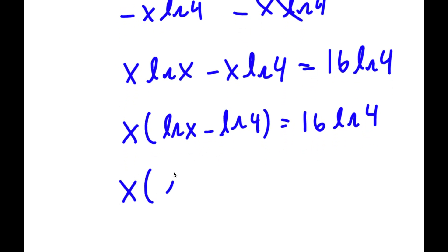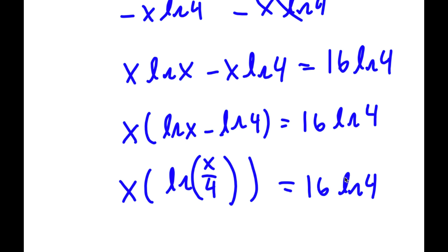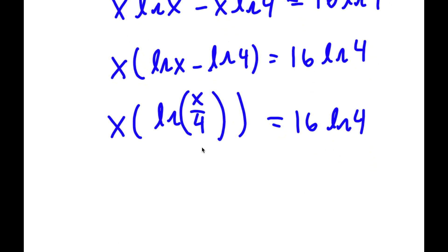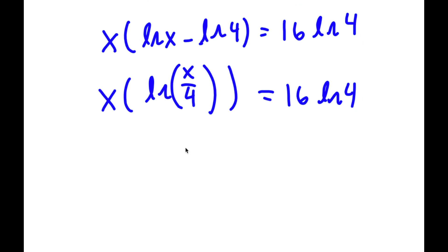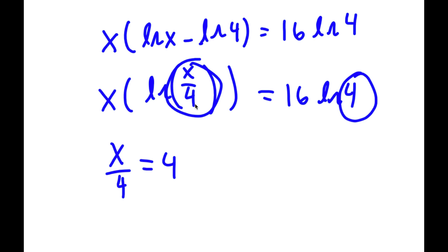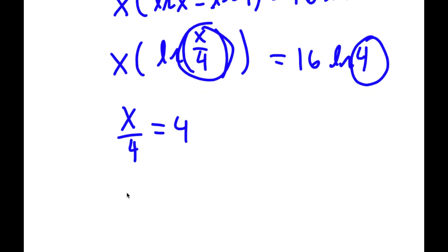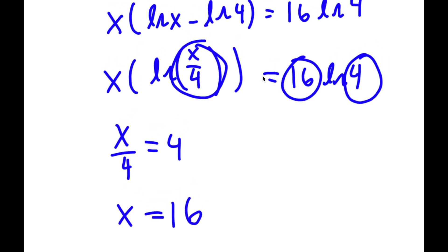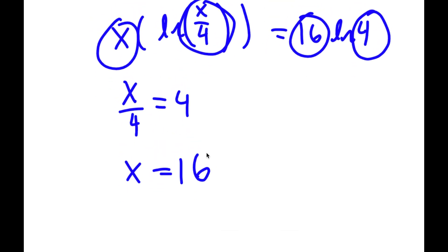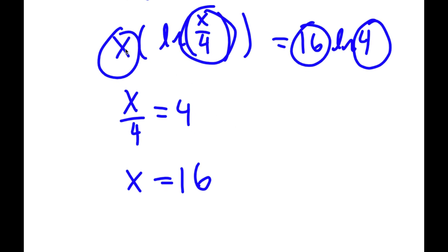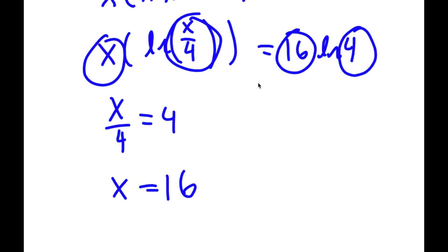Now ln x minus ln 4 is simply equal to ln of x over 4. So I have x times ln(x over 4) is equal to 16 times ln 4. This is essentially saying that x over 4 is equal to 4, and these two have to match. So if x over 4 is equal to 4, this means that x is equal to 16. To check, plugging 16 in: 16 times ln(16 divided by 4) gives 16 times ln 4, which equals 16 times ln 4. So this works.